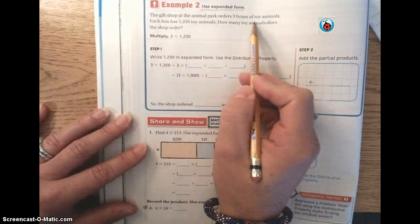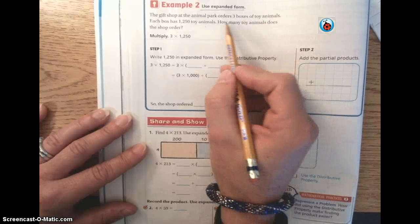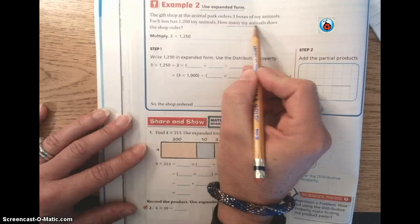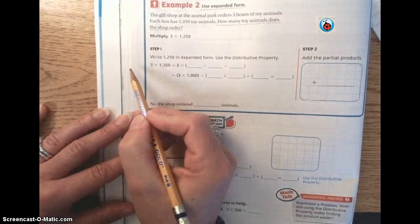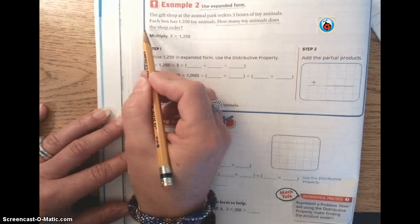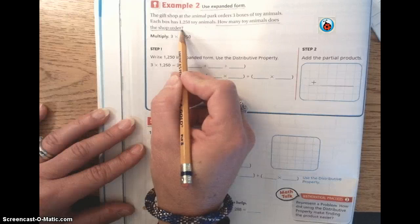Using our underlined technique, we want to underline what we need to find. We need to find how many toy animals does the shop order? So you're going to need to underline that, because that is your question that you need to find the answer to. That is the problem that you need to solve when it's all said and done.